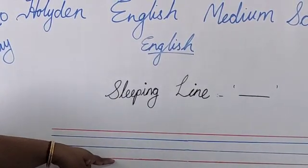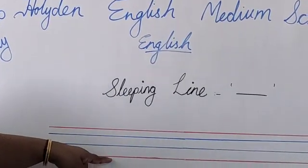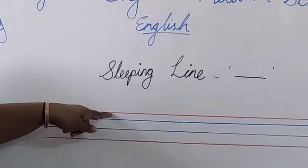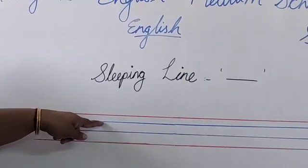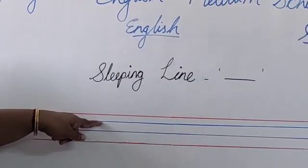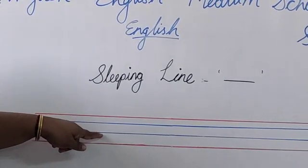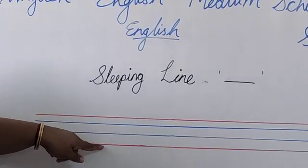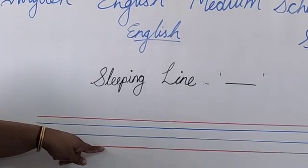Once again see, this is red line. This is blue line. This one is blue line. And this last line is red line.